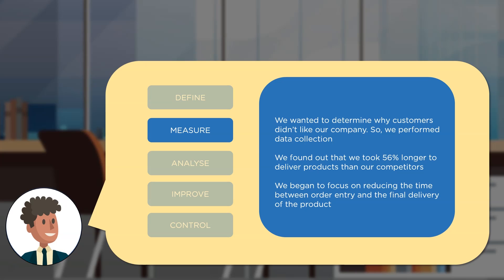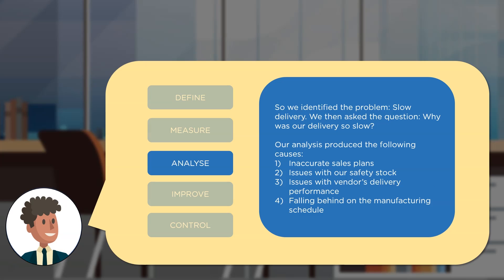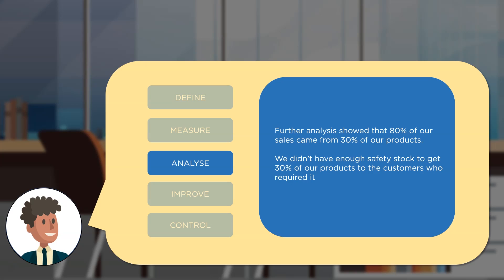In the Analyze phase, they knew what the issue was but wanted to know what made their delivery so slow. Their analysis showed possible causes: inaccurate sales plans, issues with safety stock, issues with vendor delivery performance, and falling behind on the manufacturing schedule. Further analysis indicated that 80% of their sales came from just 30% of their products, and the issue was that they didn't have enough safety stock to satisfy customers who required that 30% of products.